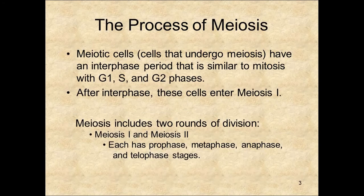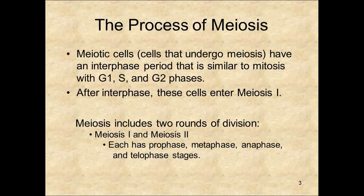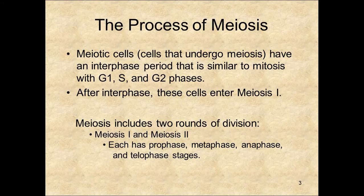Mitosis and meiosis do have similarities. First, they both undergo interphase, and interphase has a G1, an S, and a G2 phase. They also have a division process that has the same phases: prophase, metaphase, anaphase, and telophase. They also have prometaphase, but since you know that already, I've left that out of this chapter. One of the differences is that meiosis has two rounds of division, meiosis I and meiosis II.